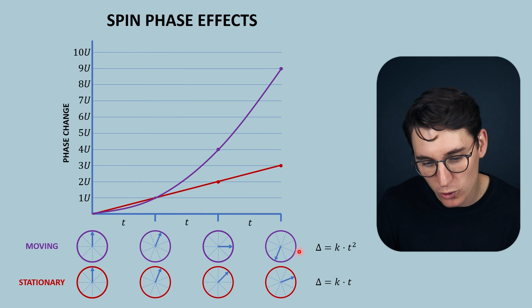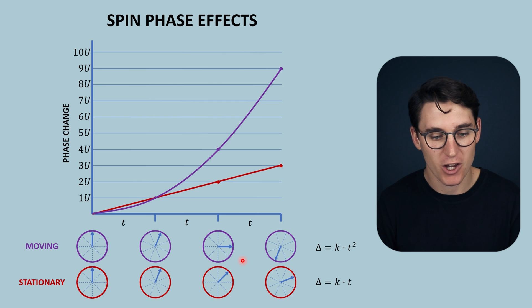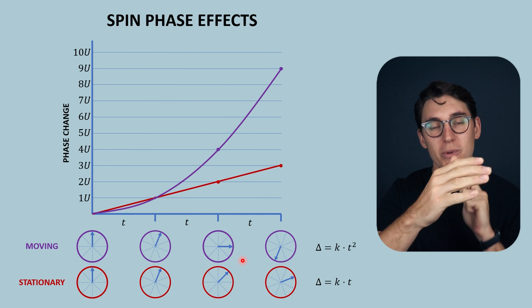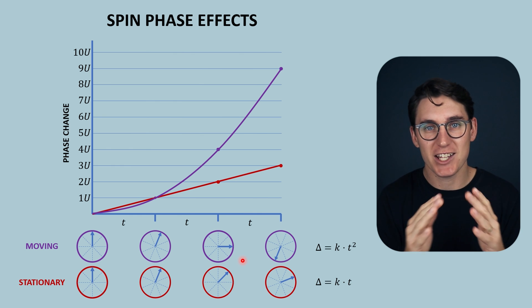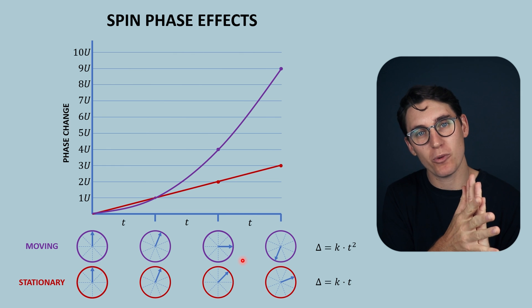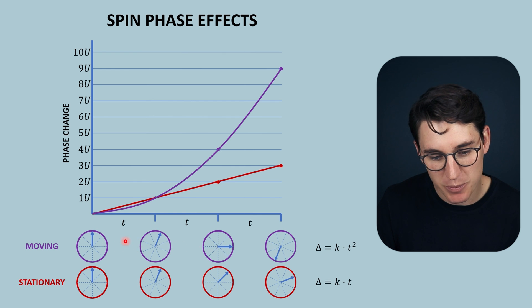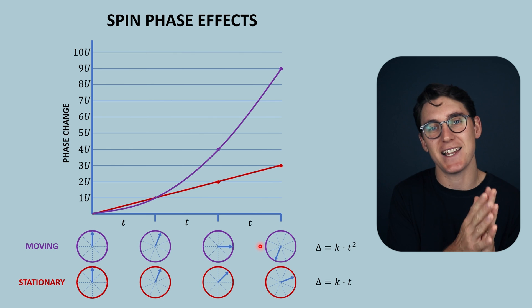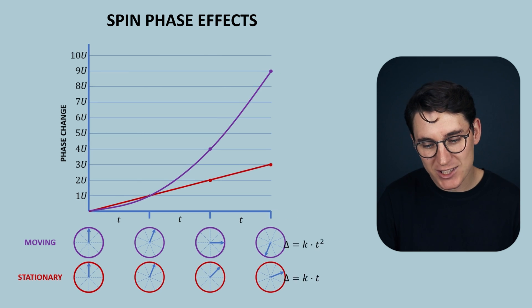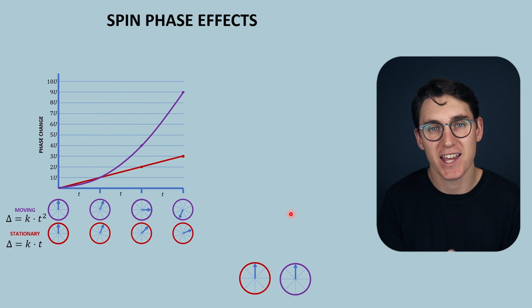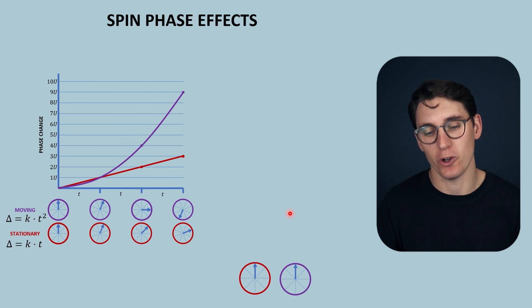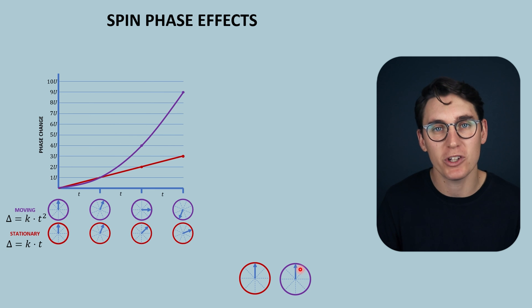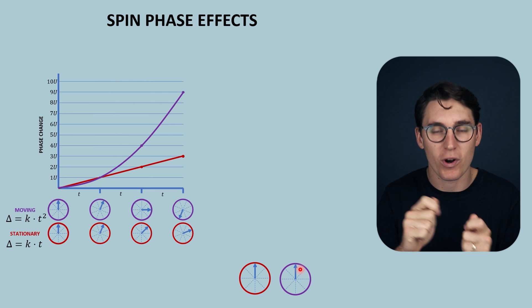It is these spin phase effects in moving spins that cause signal loss within blood vessels. With stationary spins, we apply a gradient and then an equal and opposite gradient, allowing rephasing and normal signal. Signal loss in MRI is due to the degree of phase coherence — as spins dephase more, we get less signal. Moving spins experience much more dephasing because of exponential phase change, giving less and less signal as they move across the gradient. Let's revisit how we compensate for those phase changes using rephasing lobes.